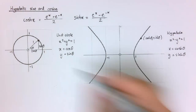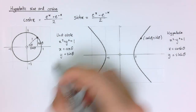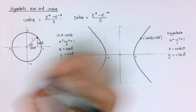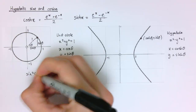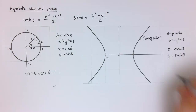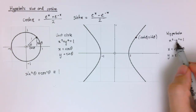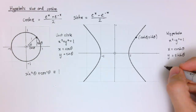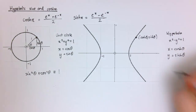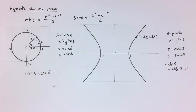One immediate consequence of this is that when we look at ordinary trig functions, we have the identity sine squared theta plus cos squared theta equals 1. We've got something very similar for the hyperbolic functions — it's just we've got a minus instead of a plus. So our identity here is cosh squared theta minus sinh squared theta equals 1. A very similar identity.